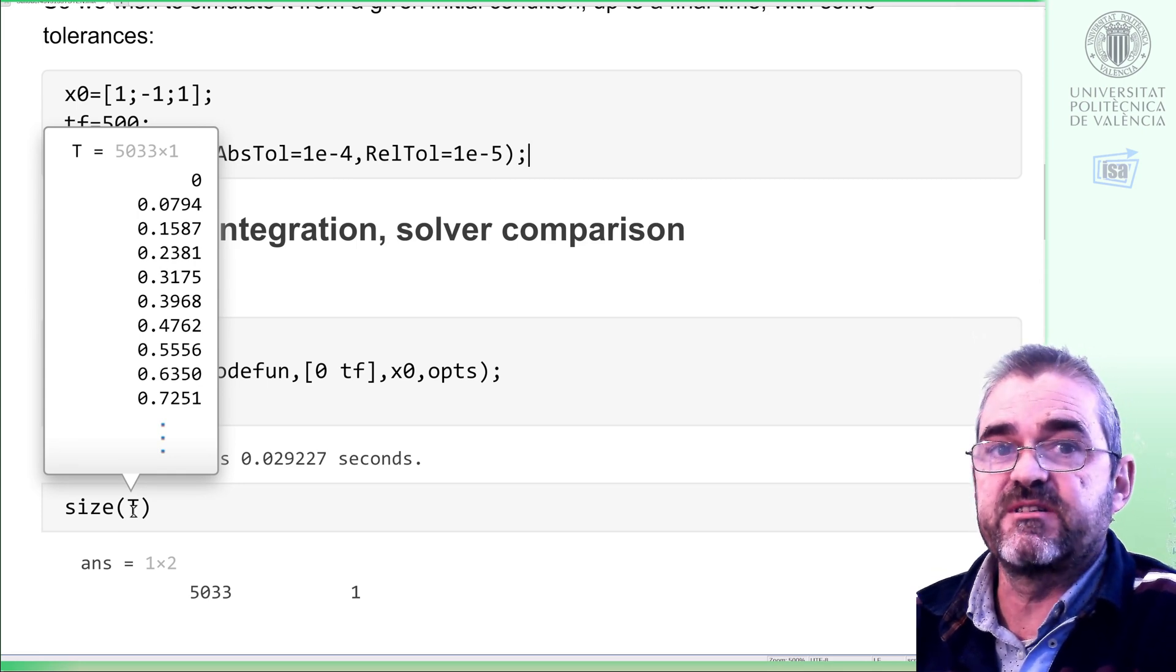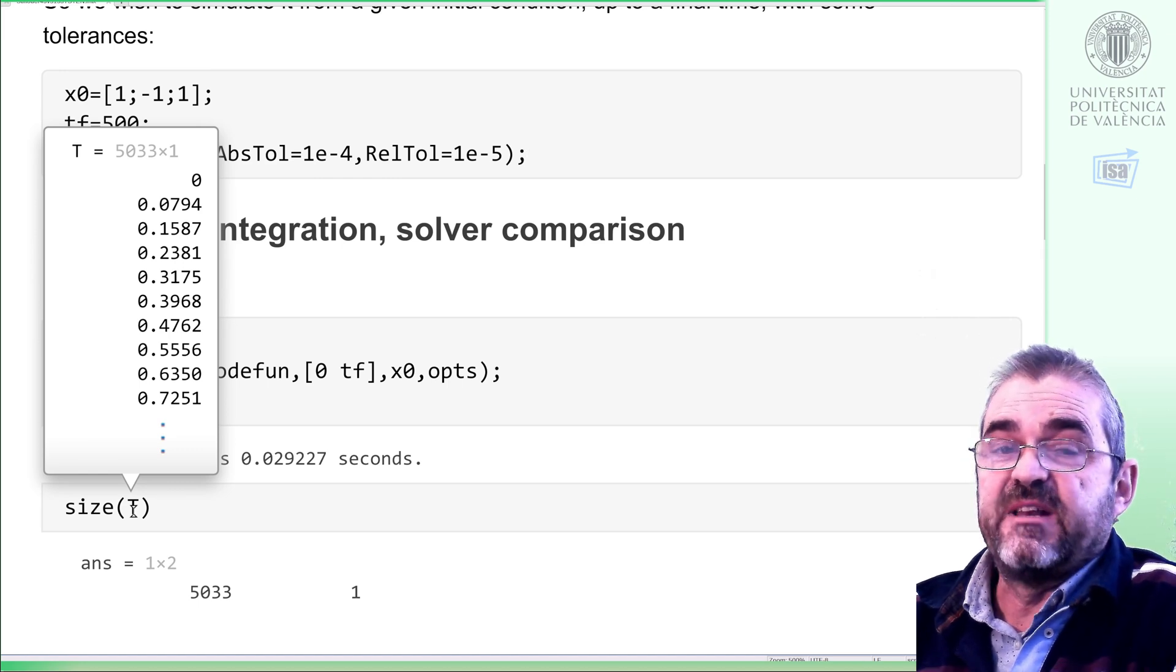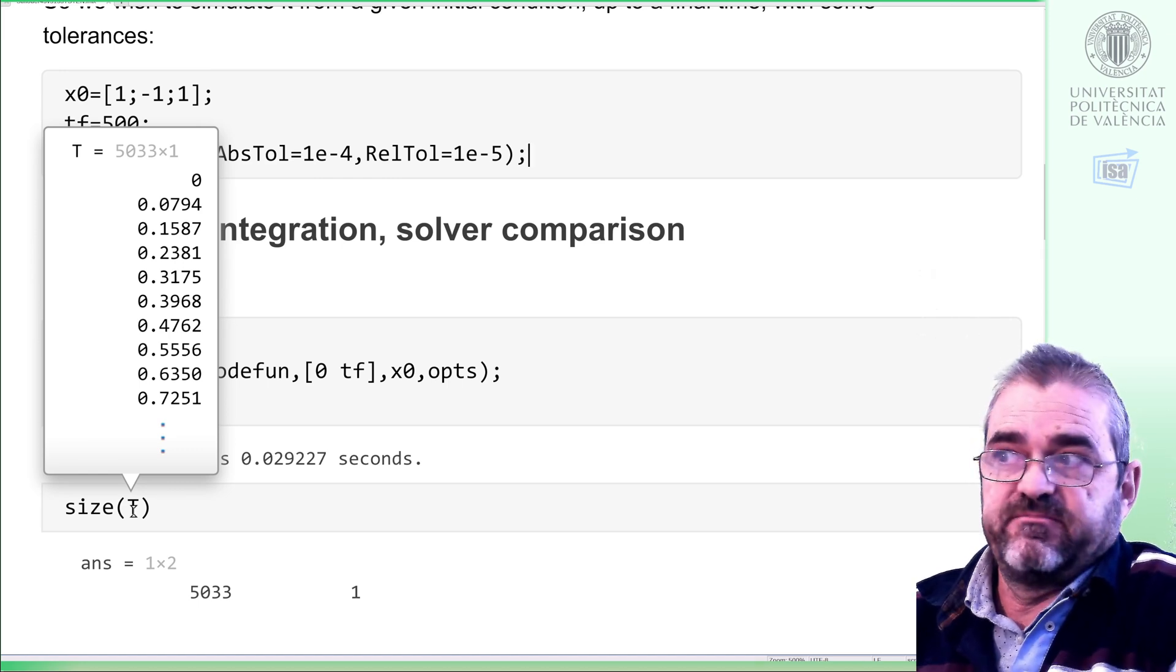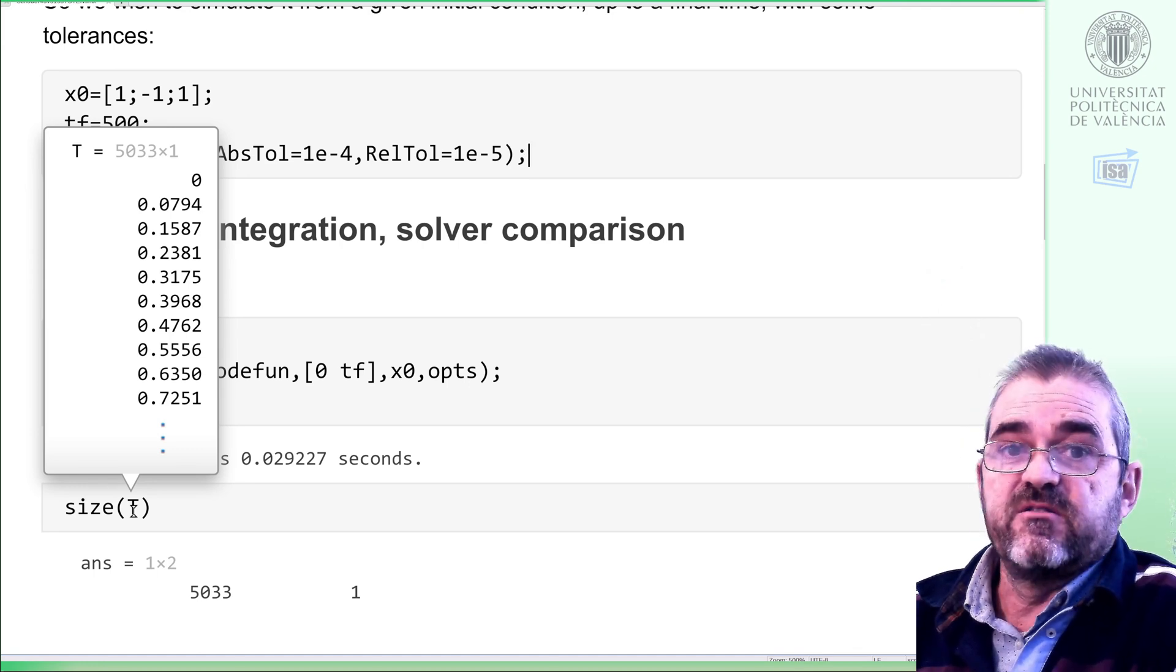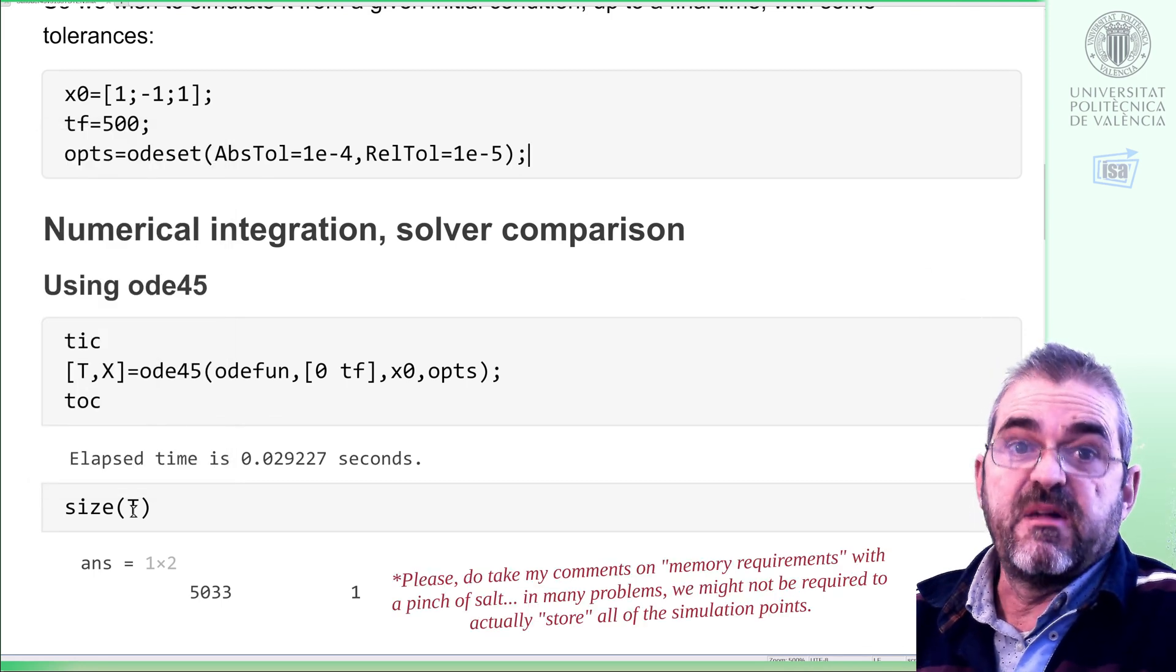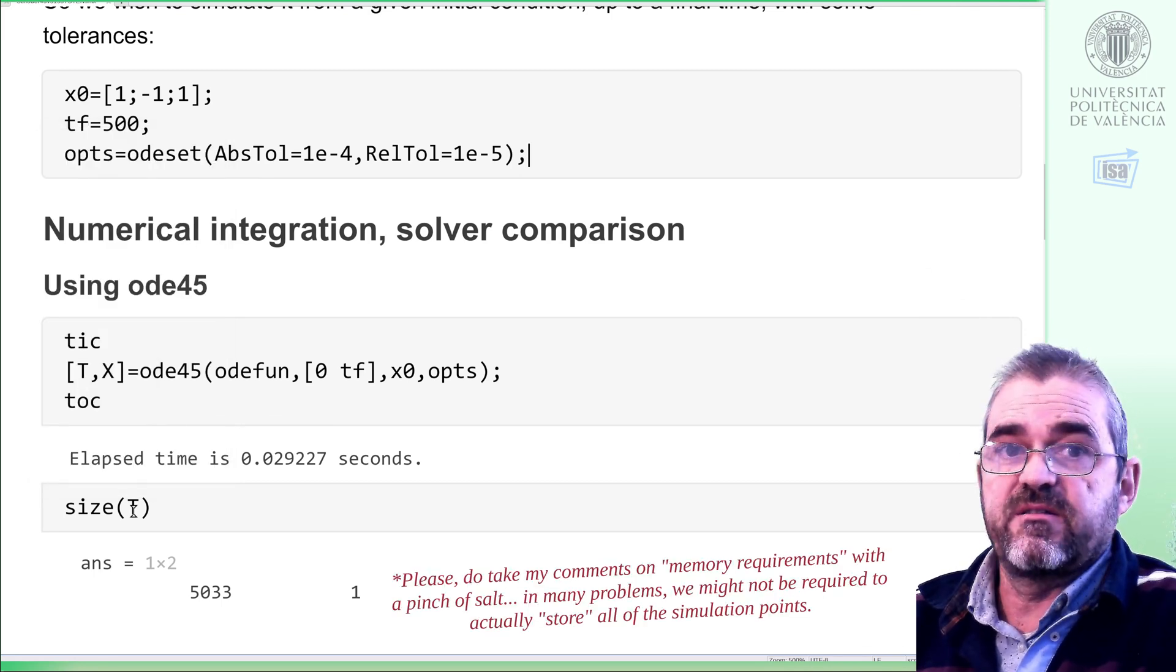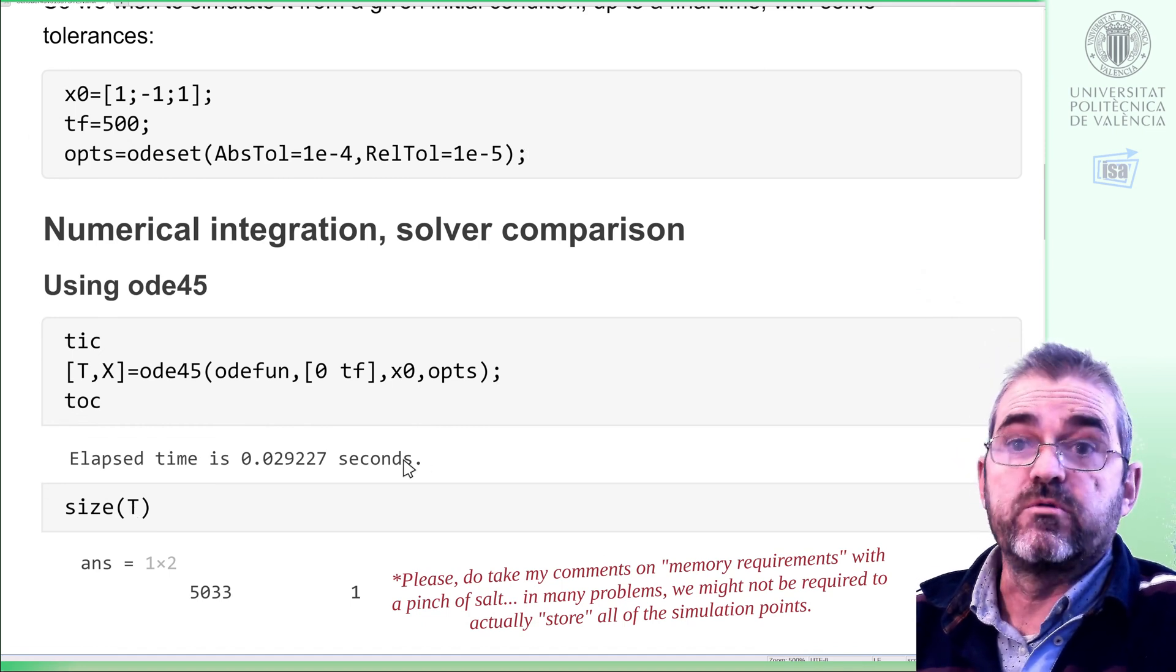So depending on the accuracy, the increment of time between simulation steps will be larger or smaller. Depends on how fast things are moving. So it's kind of using 8 cents of a second, or similar. And in memory requirements, this thing needed to store 5000 points.